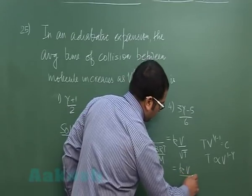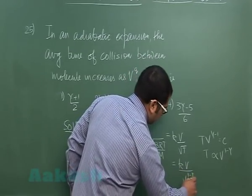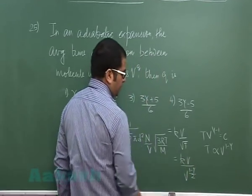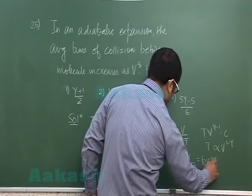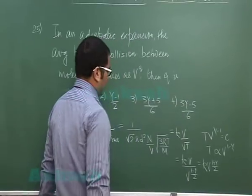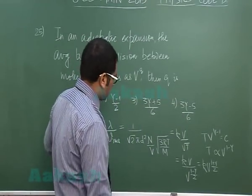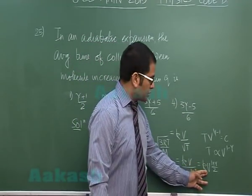Putting that value here, I get kV by V to the 1 minus gamma by 2. And taking upstairs, so that's going to be kV to the 1 plus gamma by 2.